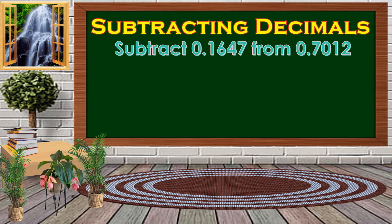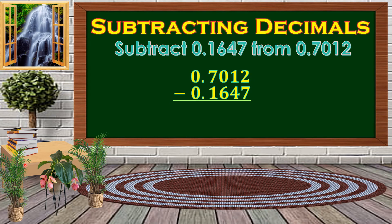Now for subtraction. For example, we subtract 0.1647 from 0.712. We again align our decimal points and subtract like subtracting whole numbers. 2 minus 7 — since 2 is less than 7, we borrow 1 from the number beside it, so 2 becomes 12. We change that neighbor digit from 1 to 0. So 1 minus 1 is 0, and 12 minus 7 is 5.